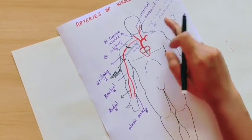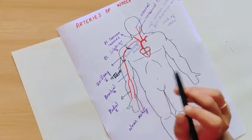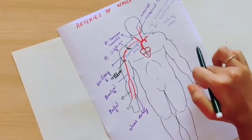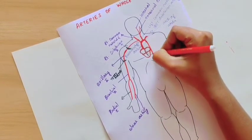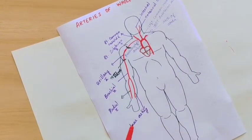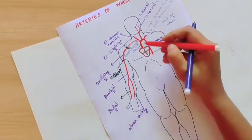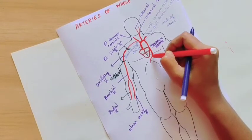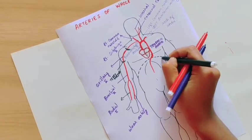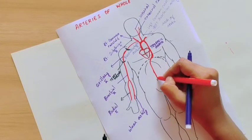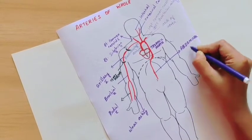This is the subclavian artery on the left side, which comes directly from the arch of aorta. The right side subclavian is a branch of the brachiocephalic artery — that is the only difference. Now the arch of aorta descends as the descending aorta, also called the thoracic aorta. The thoracic aorta passes through the diaphragm, a dome-shaped muscle, and once it crosses the diaphragm, it is called the abdominal aorta.